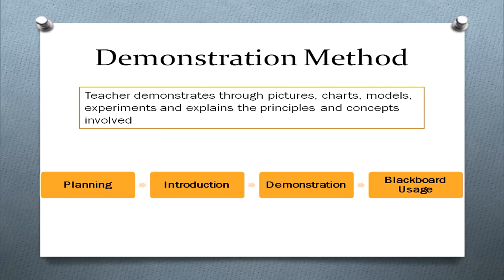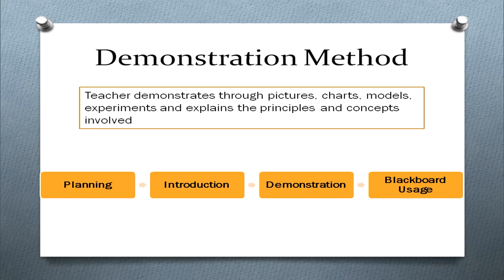The next method is demonstration method, where you as a teacher are again very active. You are demonstrating through pictures, charts, models, experiments — any combination — and you explain the children about the principles and concepts involved in the topic. Demonstration method has four steps. The first step is planning, which happens outside the classroom. As a teacher you plan what will attract the mental ability of your students, what will involve them more, and you choose the experiment and material required.